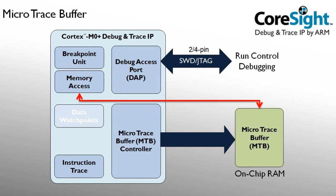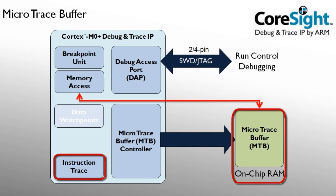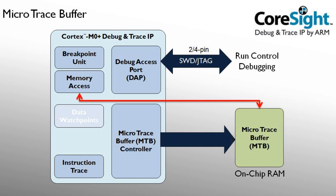Even the smallest ARM processor, the Cortex-M0 plus, offers trace via the MTB or the microtrace buffer. Besides run control debugging, the Cortex-M0 plus provides instruction trace that is streamed to an on-chip RAM. This solution is a good compromise for small form factor devices that have pin limitations, since MTB trace can be read even via the 2-pin SWD debug interface.